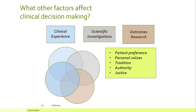In addition to clinical experience, scientific investigations, and outcomes research, we also need to take into account patient-focused elements such as patient preference, personal values, tradition, authority, and justice — to make sure that people have access to medication. If poor people don't have access to a treatment, they obviously are not going to benefit from those three things if they can't actually have that treatment.